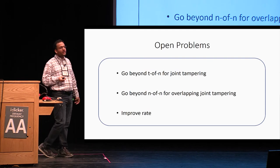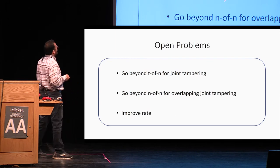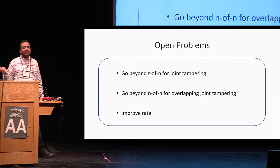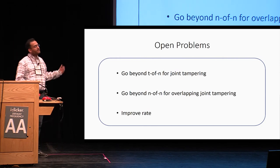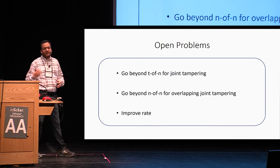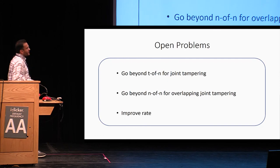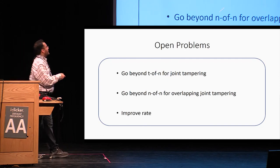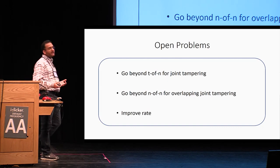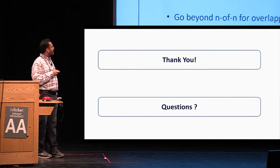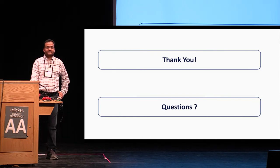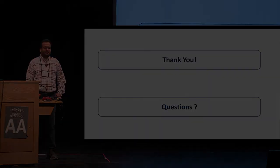There are quite a few open problems. Can we go beyond T-out-of-N for joint tampering? All our results in this paper are for individual tampering. For overlapping tampering, we gave a construction for N-out-of-N non-malleable secret sharing — can we go beyond N-out-of-N? And of course, there is always the question of improving the rate. Thank you.